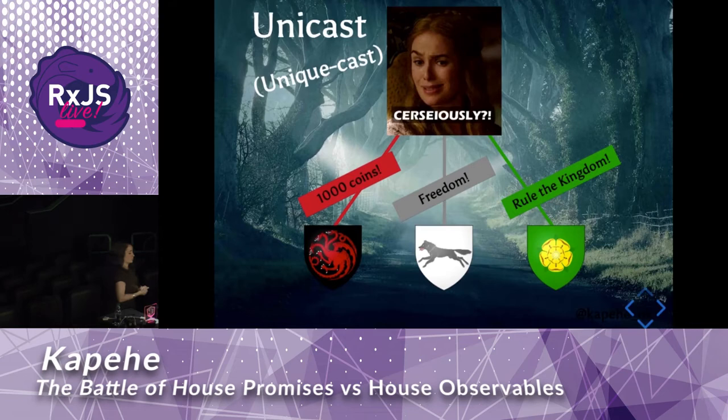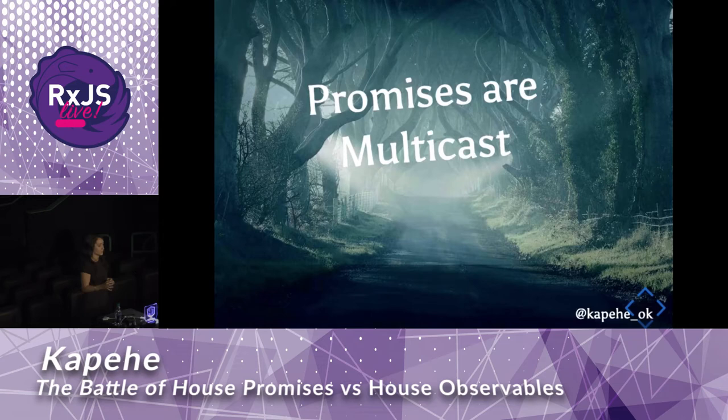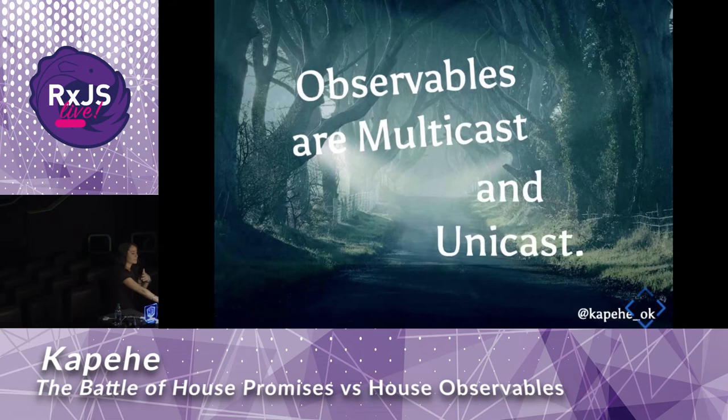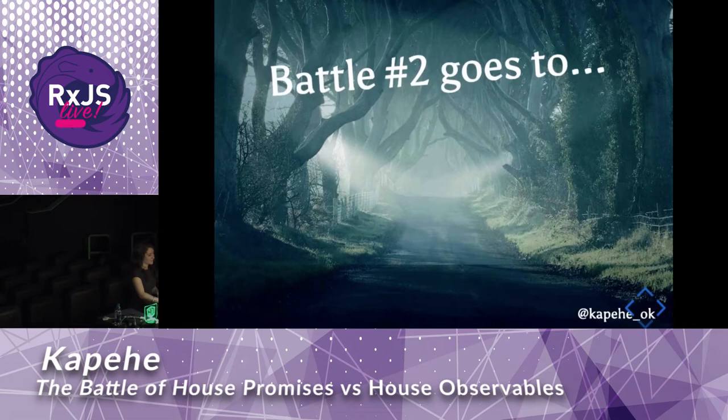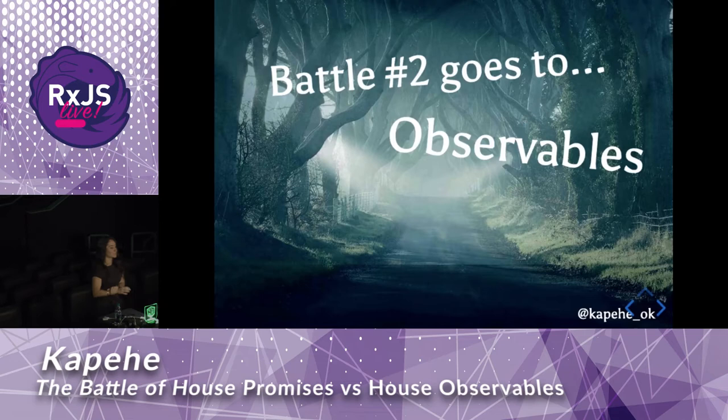Going back to promises and observables: promises, because of their eager nature, are multicast only. Observables are both multicast and unicast. By default, observables are unicast, where every result will be passed to a single unique subscriber. With that being said, battle two goes to observables for giving us a choice on which one we want to use.